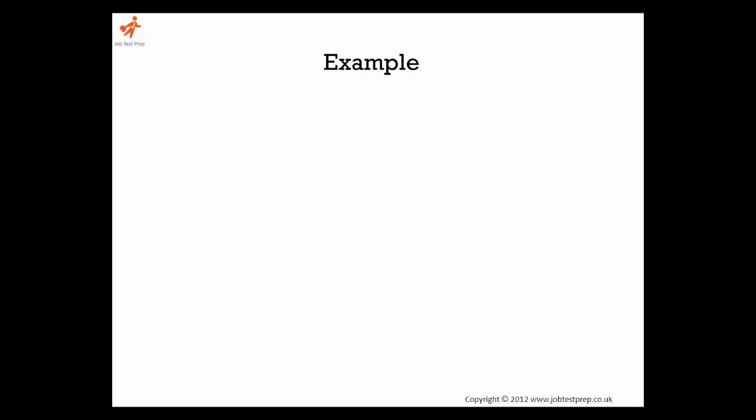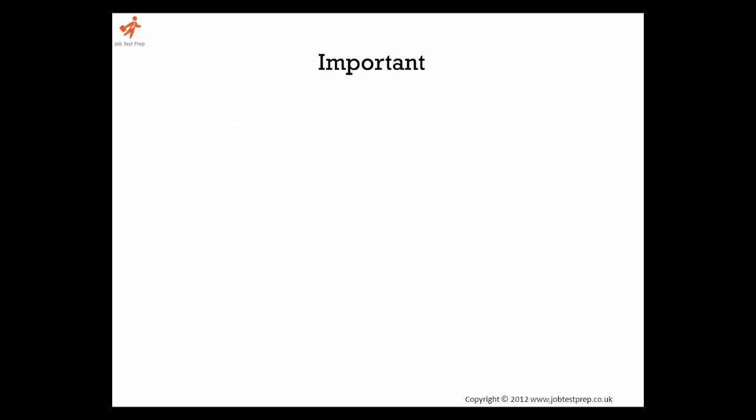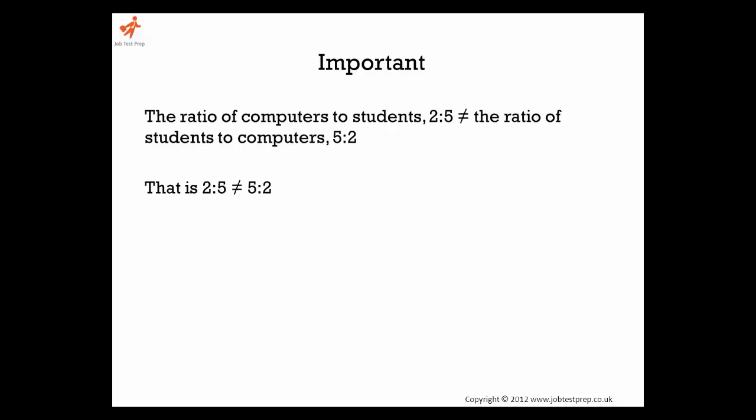Let's look at an example. Let's say that for every five students in a class there are two computers. The ratio of computers to students can be presented as a ratio of 2 to 5. Note that the order of words in the sentence is very important.